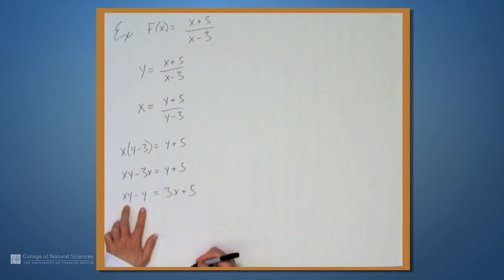Now, since every term on the left has a y in it, we can factor out a y, and we get y times the quantity (x minus 1) equals 3x plus 5.